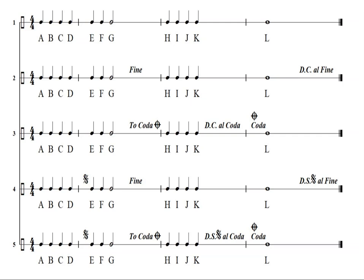Line four uses the DS Al Fine. After the whole first time through, we go back to the Segno — basically measure two — and at the Fine we stop, ending on G. Line four: A, B, C, D, E, F, G, H, I, J, K, L — E, F, G. Line four again: A, B, C, D, E, F, G, H, I, J, K, L — E, F, G.